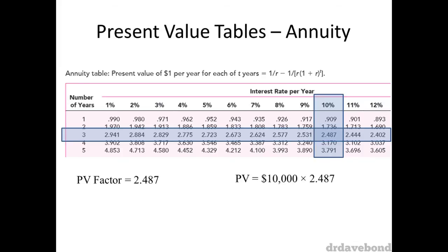We then multiply that by the $10,000 payment, just one of the payments, and we get $24,870, which is again really similar to what we did before.